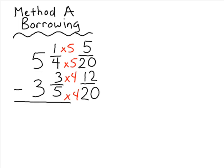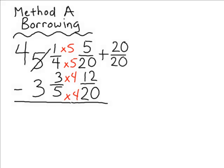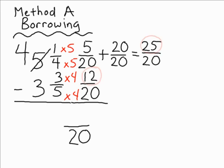Notice that the fraction on the bottom, 12 twentieths, is too large to subtract from the fraction 5 twentieths at the top. So what we are going to do is borrow one whole from the 5 and add that whole to 5 twentieths to make the value of that top fraction larger. When we borrow one whole from the number 5, we have to rewrite it as a fraction using the same denominator already given. Because the denominator is in terms of twentieths, we write 20 over 20, which is the same thing as one whole. And 5 twentieths plus 20 twentieths is 25 twentieths.